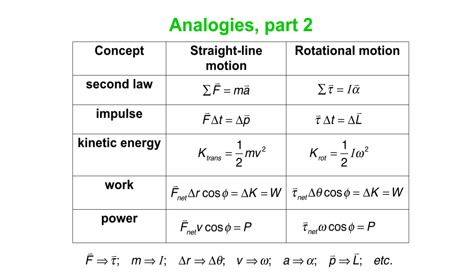So we just make all these different replacements. Force going to torque. Mass goes to rotational inertia. Displacement in a straight line goes to an angular displacement. V goes to omega. A goes to alpha. And linear momentum p goes to angular momentum. And you've got an equivalent equation. So everything we do in straight line motion has its rotational equivalent. And that is all for now.